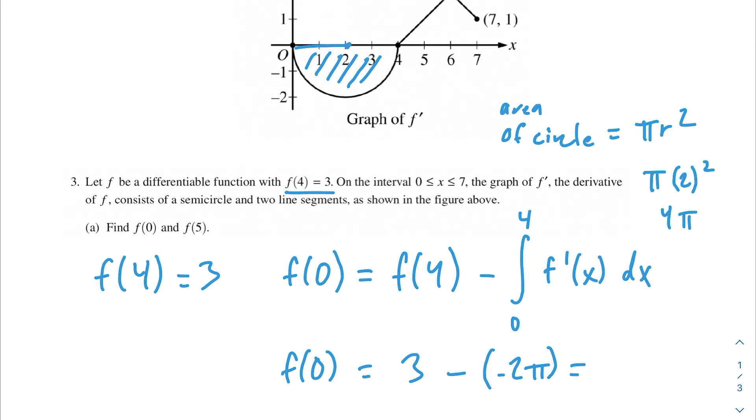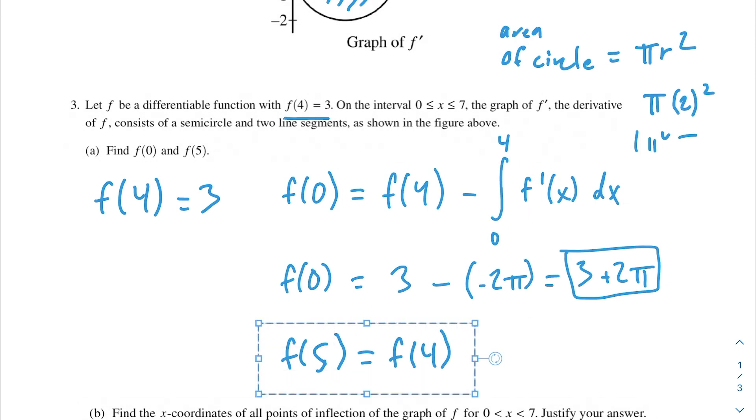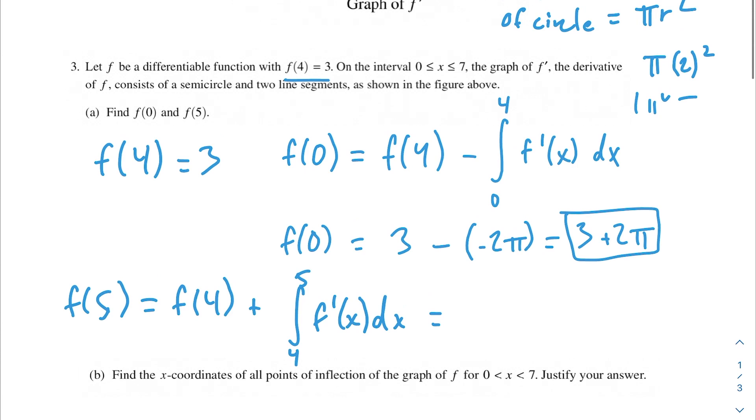So our answer for f(0) would be 3 plus 2π. Now let's figure out f(5). We use that same concept but looking ahead: f(4) plus the integral from 4 to 5 of f prime of x dx. This is just this little triangle. The area of a triangle is 1/2 base times height. Our base is 1, our height is 1, so that's 1/2. So f(5) equals 3 plus 1/2, which is 3.5. That is the answer to part A.